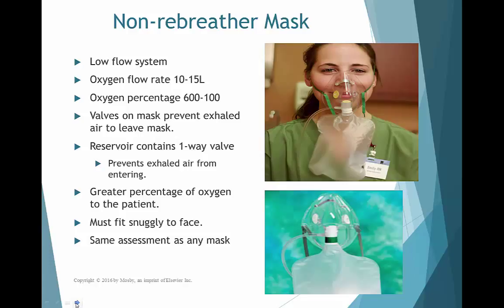If a patient is suddenly very hypoxic — O2 saturation of 78, having trouble breathing, dusky skin color — go with the best oxygenation choice: a non-rebreather mask at 15 liters. In this emergent situation, the patient receives 100% oxygen through the mask. After the patient stabilizes and we understand the contributing factors, we work at titrating down to an oxygen percentage and mode that is both comfortable for the patient and achieves the oxygenation goal.